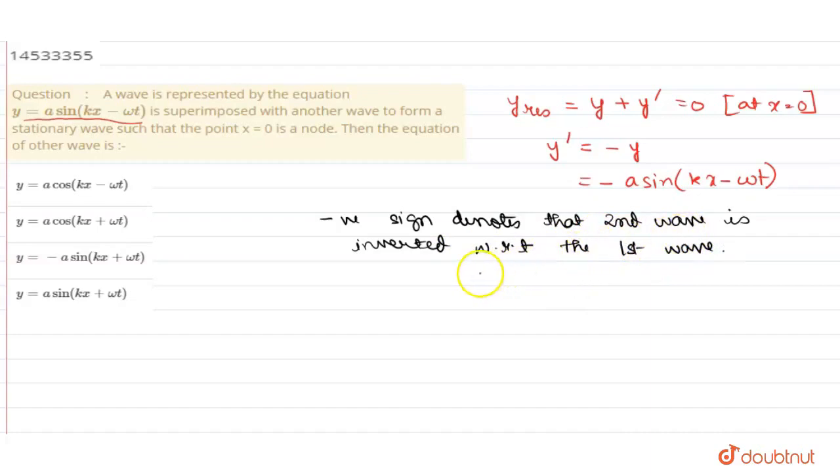So, the equation a sin(kx + ωt) also denotes that the second wave is inverted with respect to the first wave. So, this equation is actually equal to this equation. So, our answer is a sin(kx + ωt).